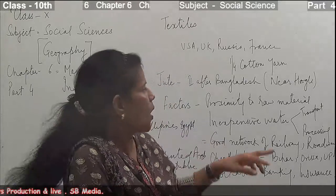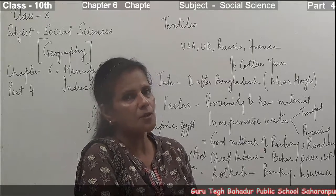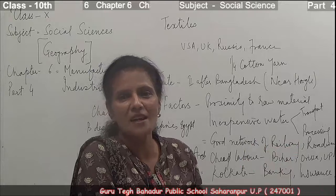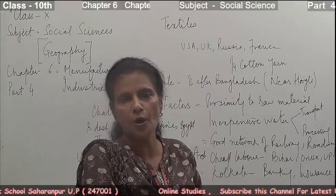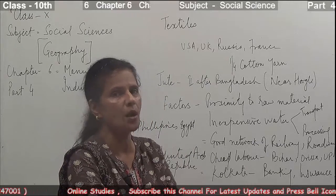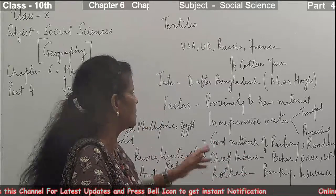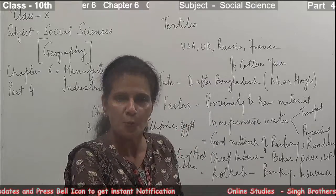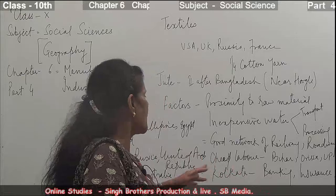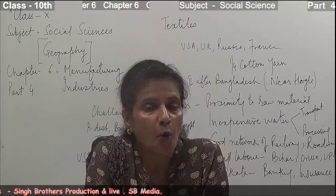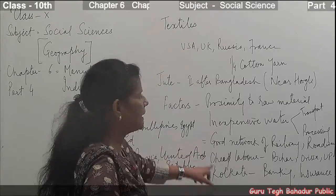Most of the jute industries are located near the Hooghly River. This is a long-answer topic for board examinations. The factors responsible are: first, proximity to raw materials — Bengal is a very important area for jute production, as jute grows in alluvial soil and the Hooghly River floods regularly, depositing alluvial soil. This proximity reduces transportation costs. Second, inexpensive water supply — water is needed both for transporting jute goods and for the processing of jute.